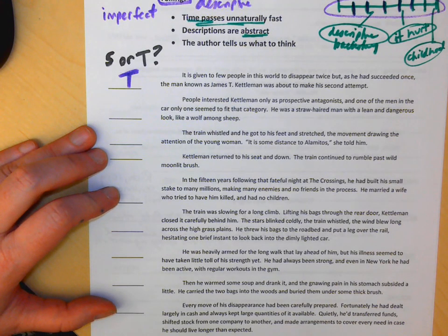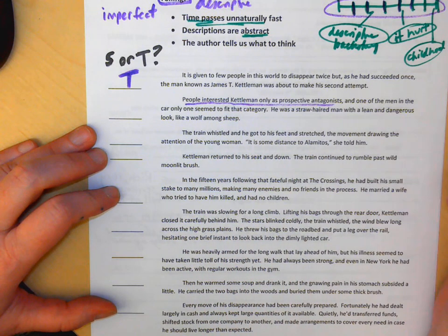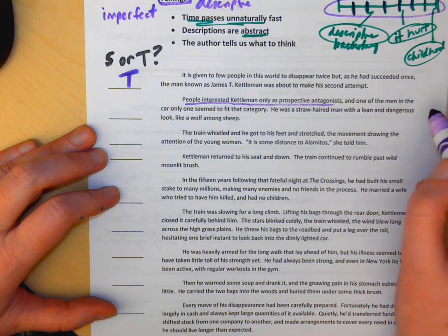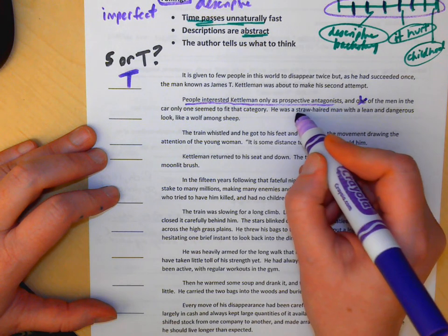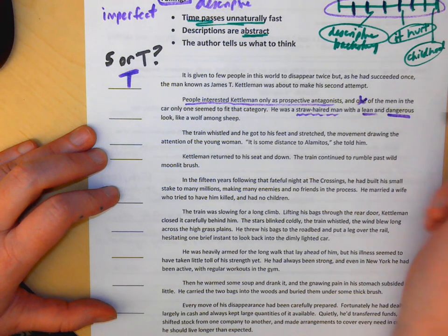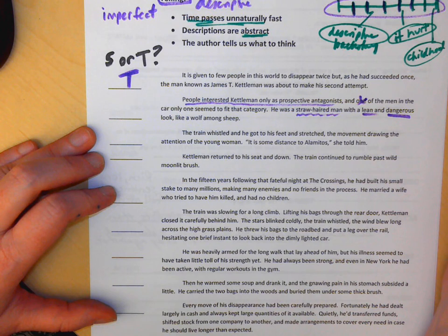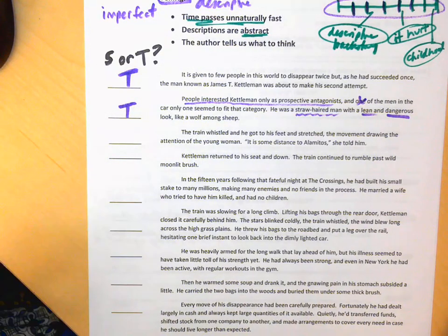This next one's a little tricky. People interested Kettleman only as prospective antagonists. Can you see how the author is coming in and telling us about Kettleman's personality, telling us about how he feels about other people? We get told that. And of the men in the car, only one seemed to fit that category. He was a straw-haired man with a lean and dangerous look, like a wolf among sheep. We do get a concrete detail there. We find out that he's straw-haired. However, the author comes in to tell us he's lean and dangerous. We don't have to infer that. The guy doesn't menace Kettleman, he doesn't get up and curse, he doesn't pull out a gun. We just get told he's lean and he's dangerous. So again, we're in telling modality. We learn things about the character. We're not experiencing anything with them.